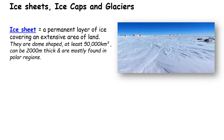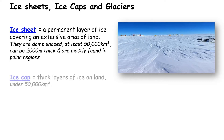Ice sheets are large areas of ice, at least 50,000 kilometres square. They can be 2,000 metres thick, mostly found in polar regions. Ice caps are the same sort of thing, just a bit smaller — they're under 50,000 kilometres square.